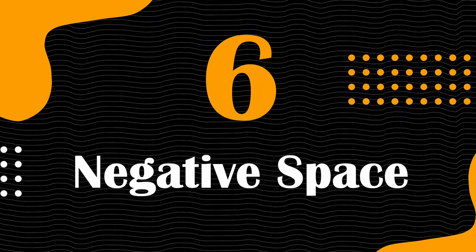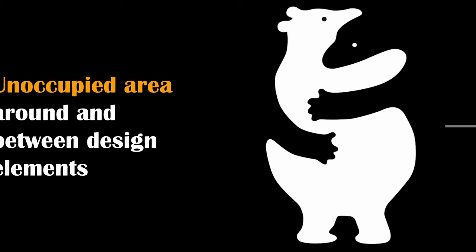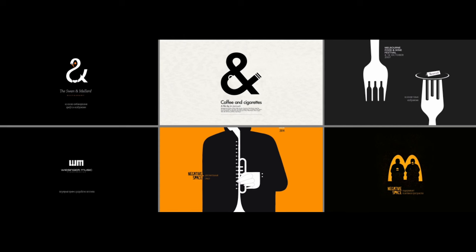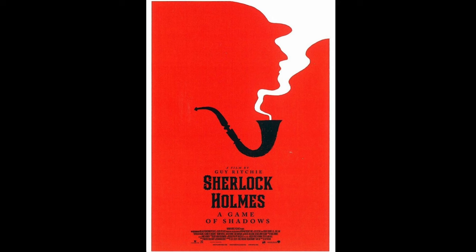Negative space, often called white space, is the unoccupied area around and between design elements. It's not just empty space — it's a powerful design tool. By artfully utilizing negative space, you create balance, clarity and focus in your designs. It allows your content to breathe, helping viewers navigate and interpret your work more easily. Negative space is an active participant in design, enabling the main elements to shine and enhancing overall aesthetics. In the world of graphic design, what you don't see can be just as important as what you do see.